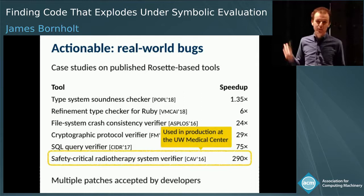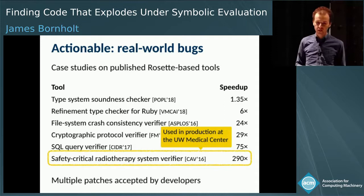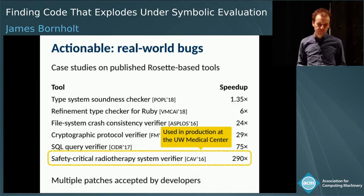I want to highlight the 290-times-faster result. That's a really big number, but what makes it especially interesting is that this tool is actually being used in production at the University of Washington Medical Center. They're rebuilding software for a radiotherapy system and use this tool to verify that software. Making it 300 times faster actually makes the development cycle much, much better. That's a really exciting result for us.